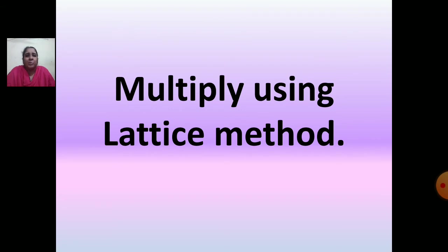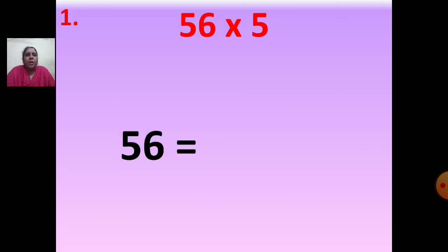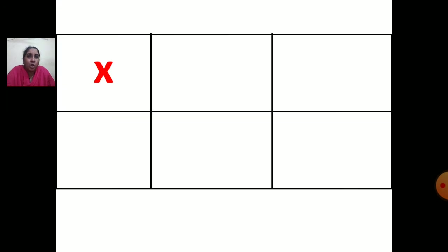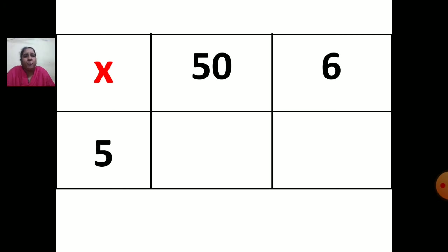Now, multiply using the lattice method. You have to do multiplication sums using the lattice method. First one: 56 multiplied by 5. First, show the breakup of 56. 5 is in the tens place, so the breakup is 50 plus 6 — 6 is in the units place. After writing the breakup, write the numbers in columns, put the multiplication sign. 50 and then 6, multiplied by 5.